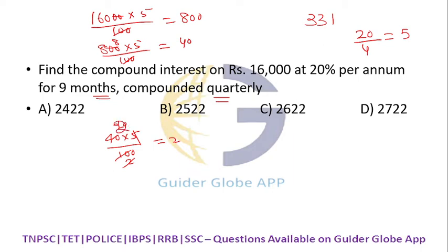So you multiply this one by 3, this by 3, this by 1. Three into 800 is 2400, three into 40 is 120, two into 1 is 2.